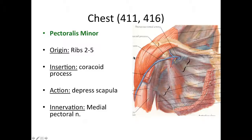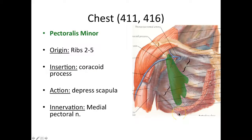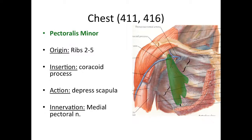Next we have pectoralis minor. In order to see this, we had to cut pectoralis major out of the way. Pectoralis minor originates from ribs two to five, though you might see some variation in the lab — three to five or three to four. It just varies with bodies, but two to five is most common.